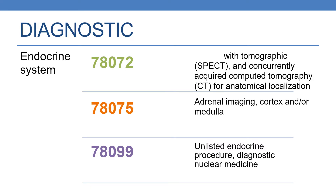The next code is 78075, which deals with adrenal imaging, cortex and/or medulla. And finally, 78099, which is an unlisted endocrine procedure, diagnostic nuclear medicine. By this, we complete the diagnostic nuclear medicine codes for the endocrine system.